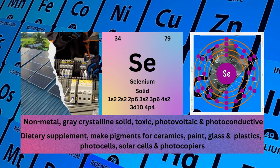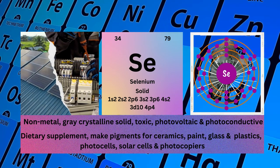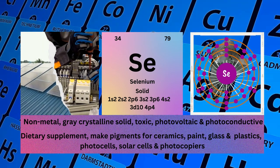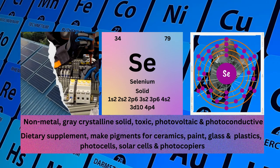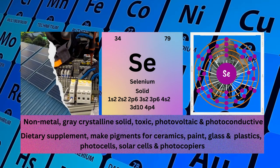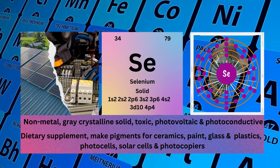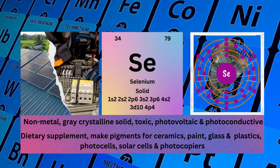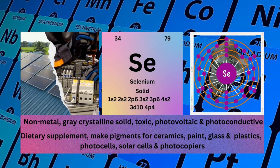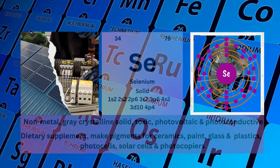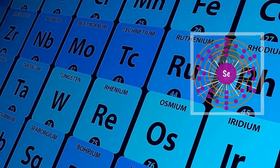Physical properties: non-metal, gray crystalline solid, toxic, photovoltaic and photoconductive. Selenium used for dietary supplements, making pigments for ceramics, paint, glass and plastics, photocells, solar cells and photocopiers.